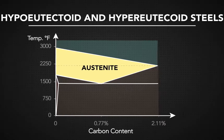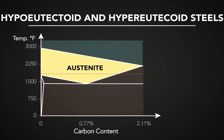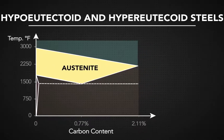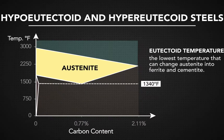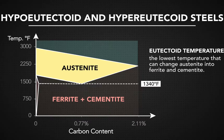At 1,340 degrees Fahrenheit, steel reaches the eutectoid temperature, which is the lowest temperature that can change austenite into ferrite and cementite.